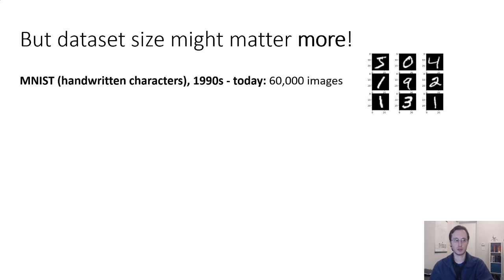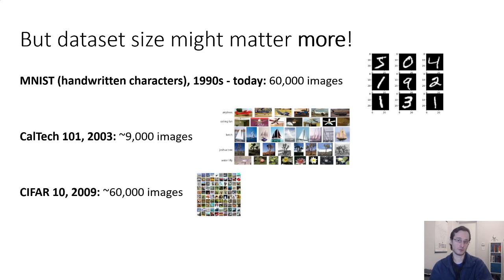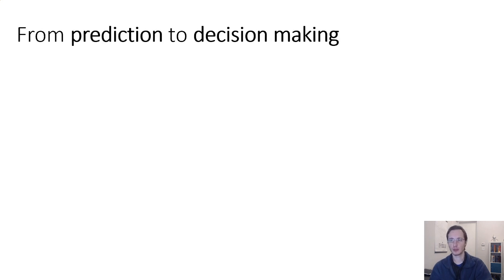Older data sets like MNIST had training sets of tens of thousands of images. More recent data sets, even as recently as 2009, were still in the high tens of thousands, whereas data sets like ImageNet have millions of training images. In natural language processing, the really good results are obtained by training on enormous data sets of hundreds or thousands of millions of natural language sentences. So, we could deduce that if we want machine learning systems to work really well, we should use large models trained on very, very large data sets.